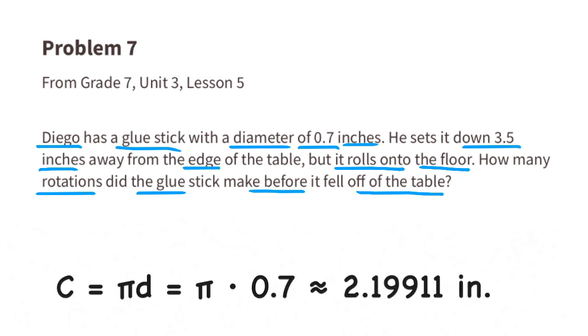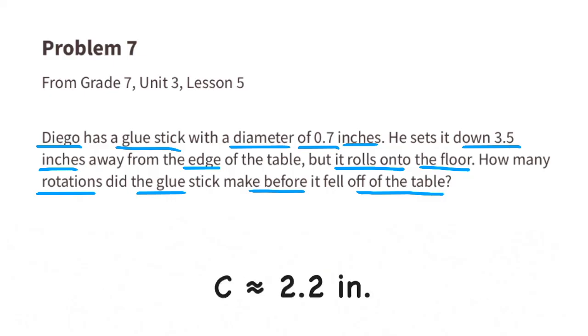Since the glue stick was rolling, we need to know the circumference of the glue stick. The circumference is pi times the diameter, which equals approximately 2.2 inches.